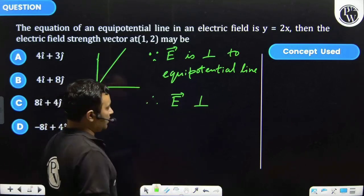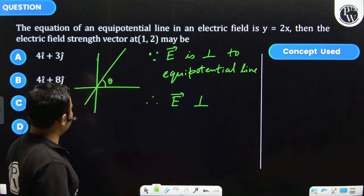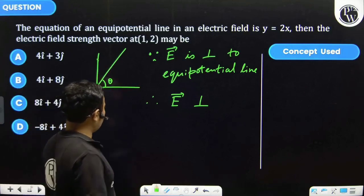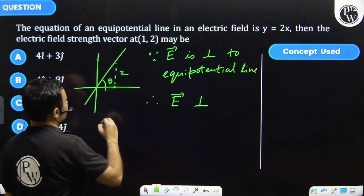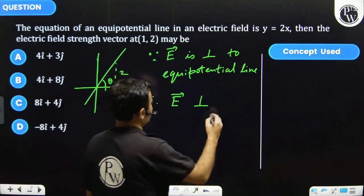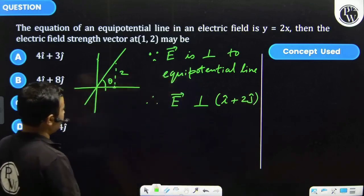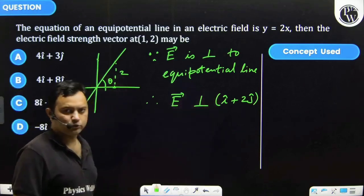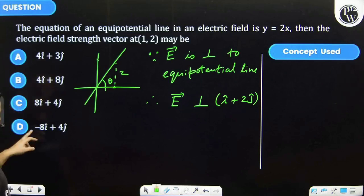The slope of this line: tan(θ) = 1/2, so tan inverse of 1/2, which gives us 2 by 1 — meaning the direction vector is î plus 2ĵ. Now if that is the case, then the dot product of the electric field vector with î plus 2ĵ would be zero.